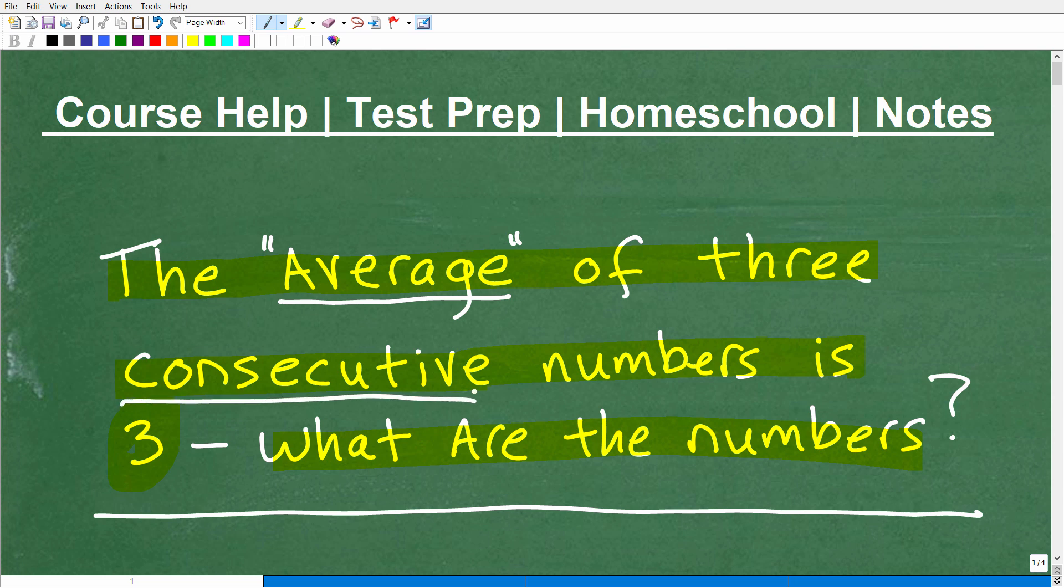And then consecutive, what does consecutive mean? Well, let me go ahead and give you a hint. Consecutive means like three consecutive numbers would be like 7, 8, and 9. One number and then the next following number and then the next following number after that. These are three consecutive numbers.